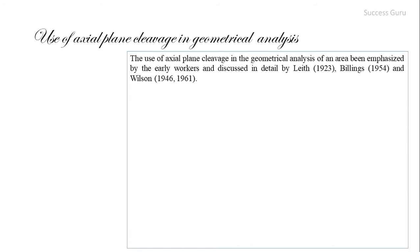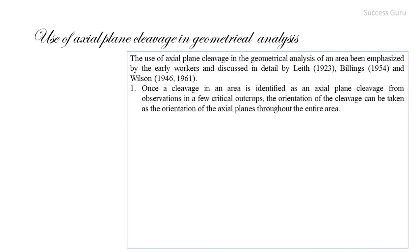The use of axial plane cleavage in geometric analysis has been emphasized by earlier workers and discussed in detail by Leith, Billings, and Wilson. Once cleavage in an area is identified as axial plane cleavage from observations at a few critical outcrops, its orientation can be taken as the orientation of the axial plane throughout the entire area. This allows cleavage measurements to be used as axial plane data even where outcrops are few.